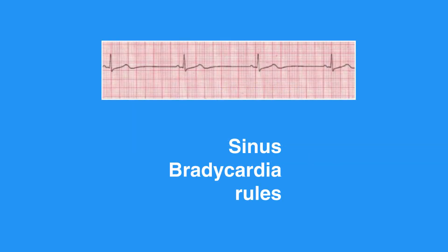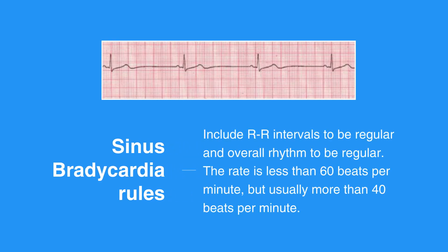Sinus bradycardia rules include RR intervals to be regular and overall rhythm to be regular. The rate is less than 60 beats per minute, but usually more than 40 beats per minute. There is one P wave in front of every QRS, and they appear uniform. The PR interval measures between 0.12 and 0.20 seconds in duration and is consistent. The QRS complex measures less than 0.12 seconds.